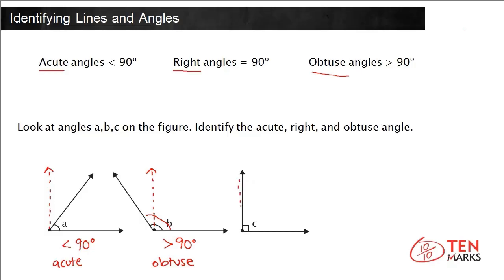For angle C, the dotted line goes right on top of the ray in this angle. So angle C is exactly equal to 90 degrees. Therefore, it is a right angle.